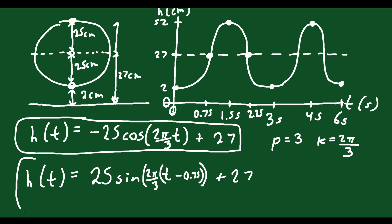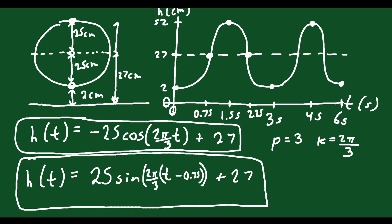This is another equation that represents this function. I'd encourage you to try to find a couple more — another sine and another cosine — because these aren't the only ways. You could do a cosine with a phase shift instead of a negative, a sine with a different phase shift, or a negative sine with a different phase shift. There are any number of possibilities, so definitely try that on your own.